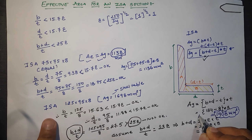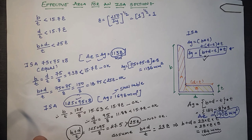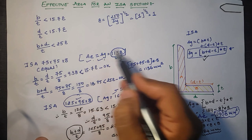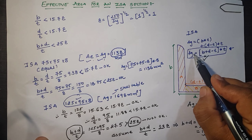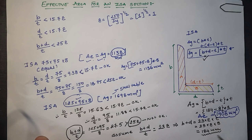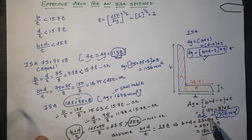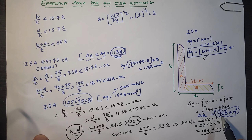So the effective area for ISA 125×95×8 is 1408 mm², which is used for strut analysis. In summary: first find the effective area of the given section using Table 2, page 18. If all criteria are satisfied, Ae = Ag. If not, assume (b + d)/t less than 25ε, compute b + d, then use Ae = (b + d − t) × t. If you have any queries, my email ID is in the description. Thank you.